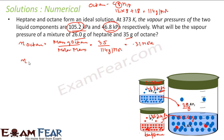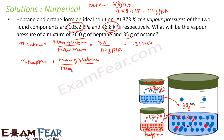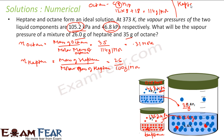Similarly, moles of heptane equals mass of heptane divided by molar mass of heptane. Mass of heptane is 26 grams. Heptane is C7H16, so the molar mass is 7×12 + 16 = 100 grams per mole. Solving this gives 0.26 moles of heptane.